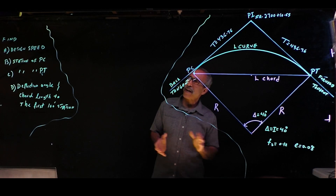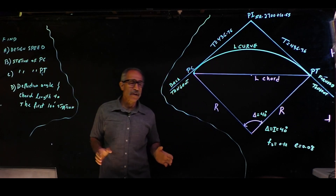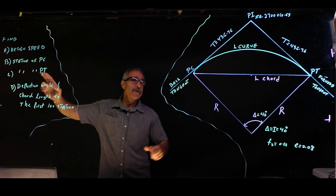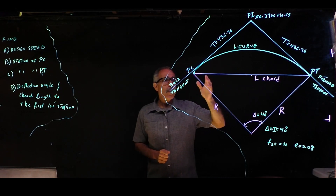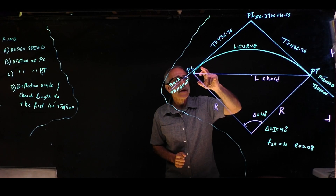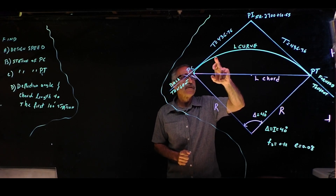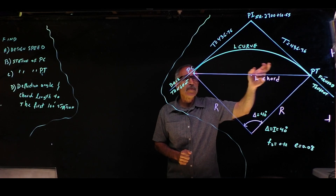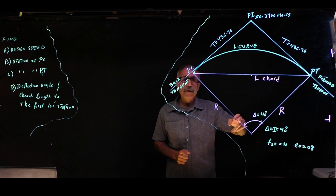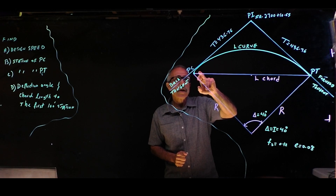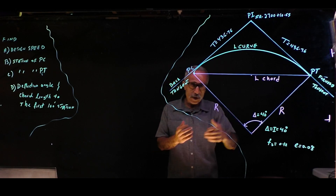They're asking us to find the design speed for this curved road, what is the station of PC, what is the station of PT, and when we lay out each 100-foot station along the curve, what is the deflection angle, the chord length, and the curve length for the first station.